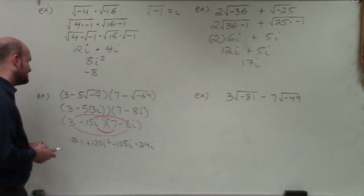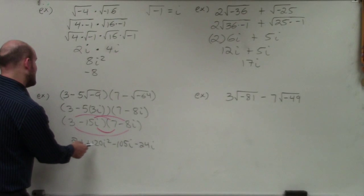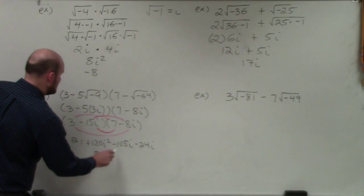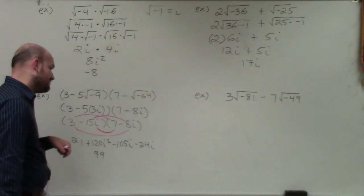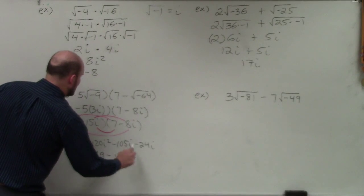i squared is negative 1, so negative 1 times 120 is negative 120. Negative 120 plus 21 is 99. And negative 105 minus 24 is negative 129i.